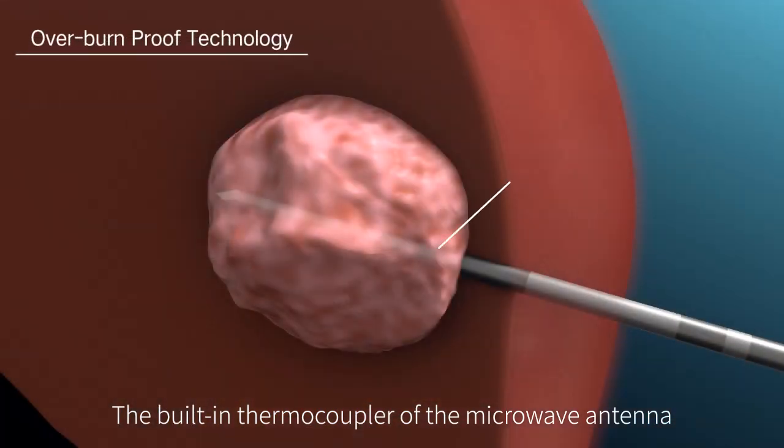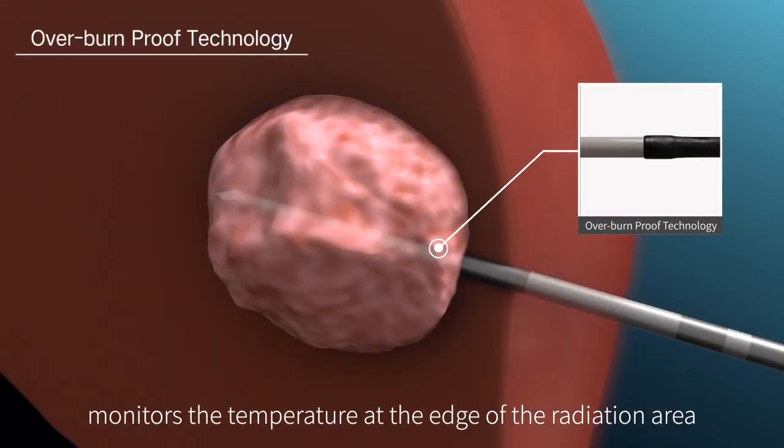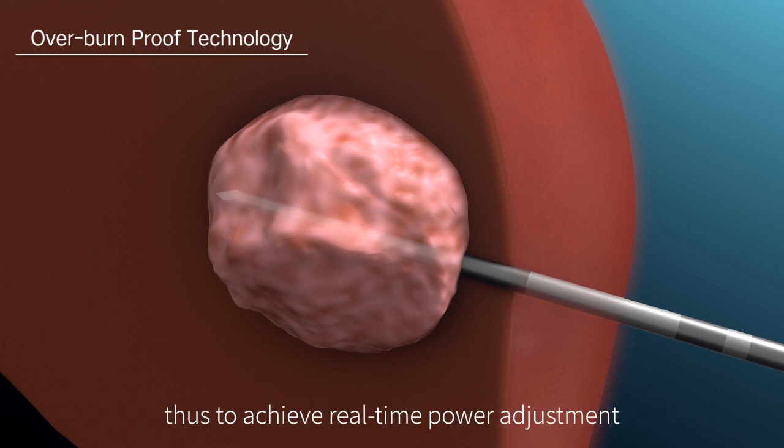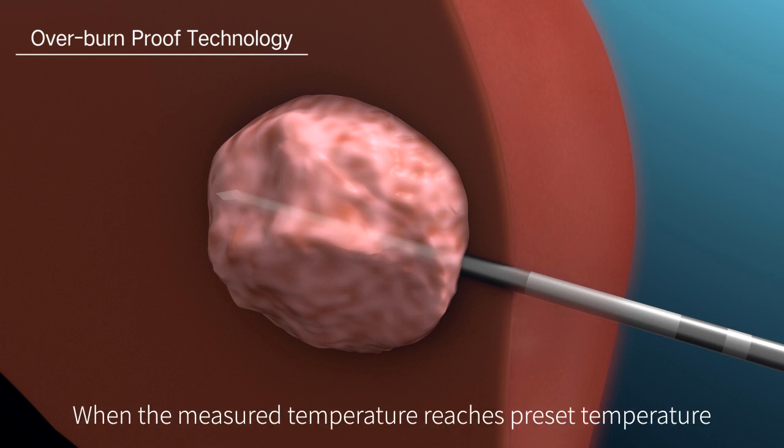The built-in thermocoupler of the microwave antenna monitors the temperature at the edge of the radiation area to achieve real-time power adjustment. When the measured temperature reaches preset temperature, the power is automatically adjusted.